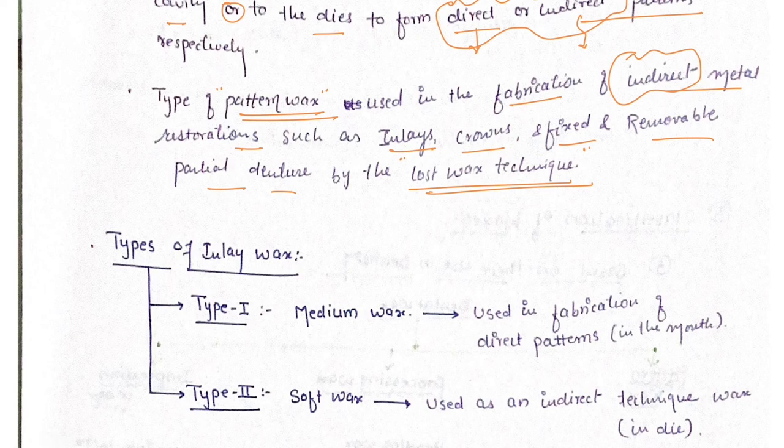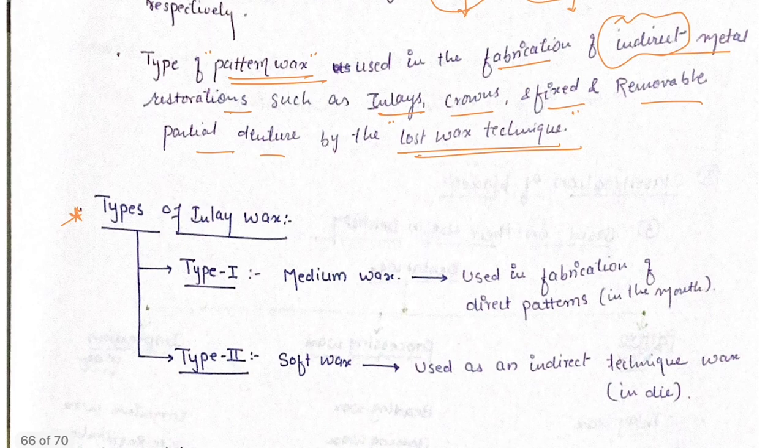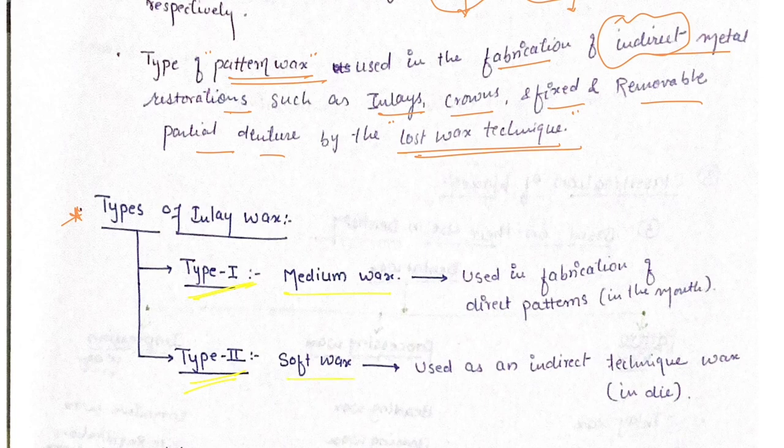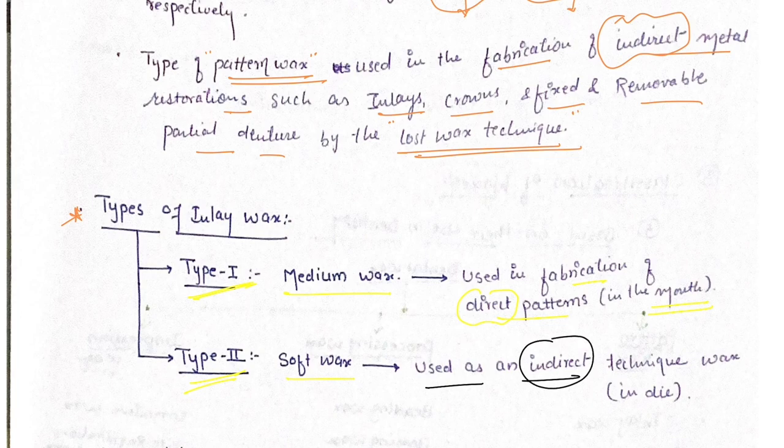If we talk about types of inlay wax, mainly divided into two types: Type 1 and Type 2. Type 1 is medium wax used in the fabrication of direct patterns in the mouth. Type 2 is soft wax used in indirect technique on dies. Die is a special short answer question for 3 marks.